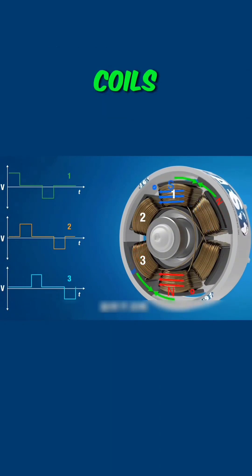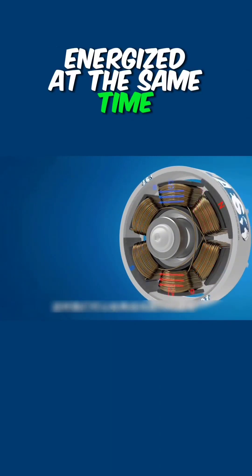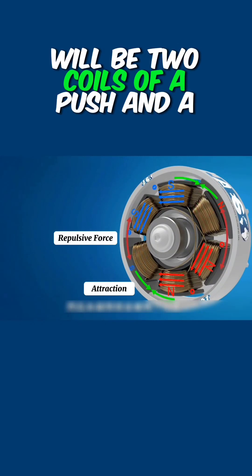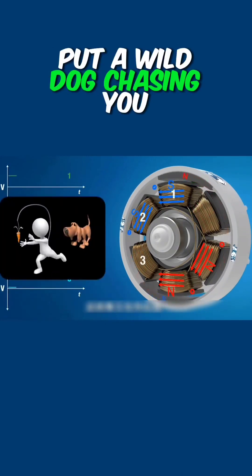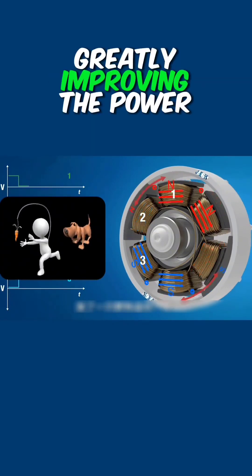Then we can energize two sets of coils at the same time, and the permanent magnet will be pushed and pulled by two coils. This is like putting a wild dog behind you chasing you, greatly improving the power of the motor.